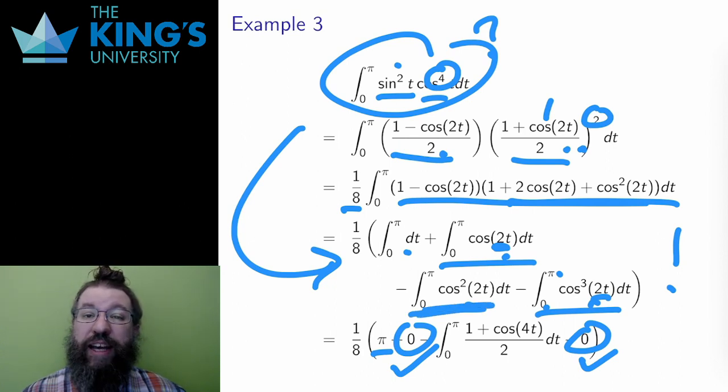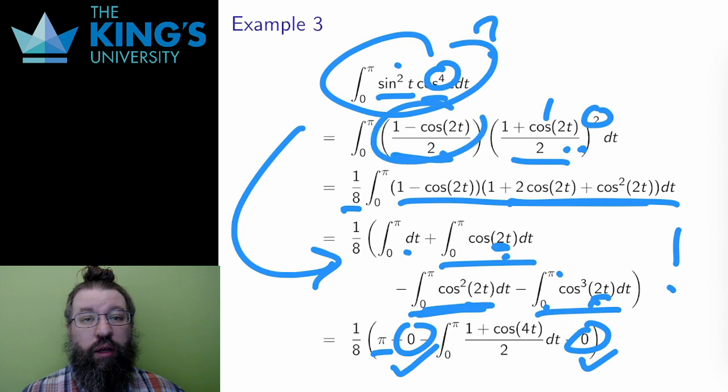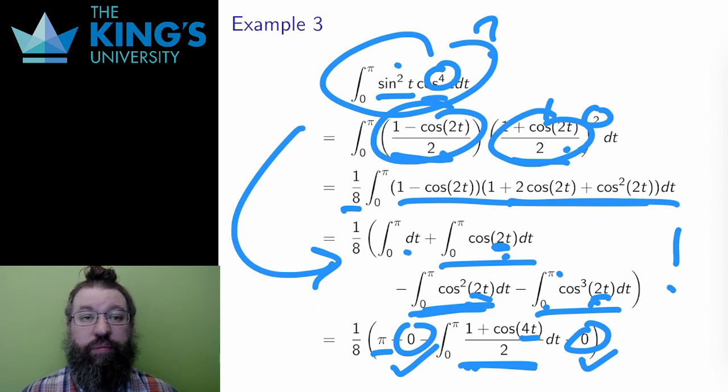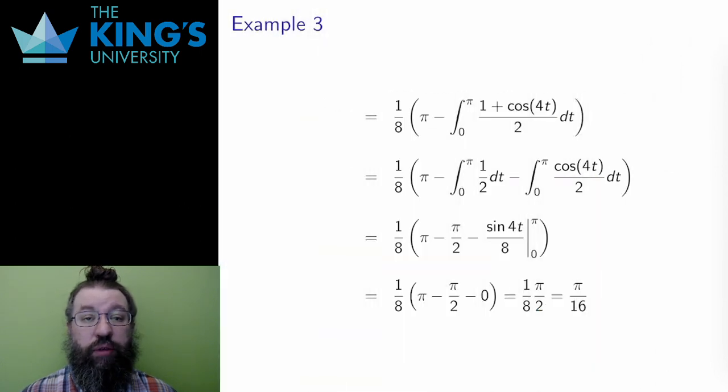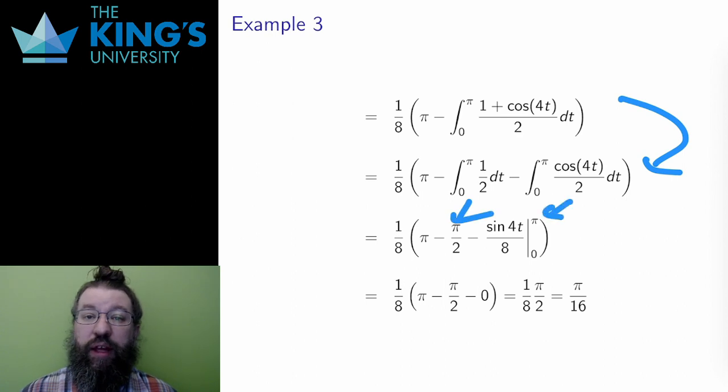For the third integral, I don't have a direct approach for cos squared. However, I can use the same half-angle again. Cos squared is 1 plus cos 2t over 2, but since the original is 2t, the new term inside the cosine is going to be 4t. Then I can split this integral up into two, both of which are just basic integrals, one of a constant and one just of a cosine. I finish those two integrals, then I put it all together to get pi over 16.